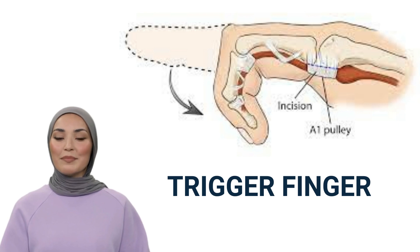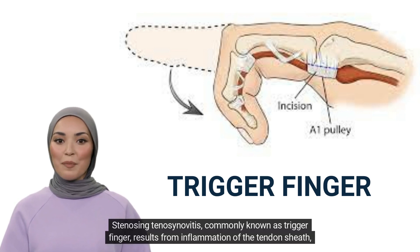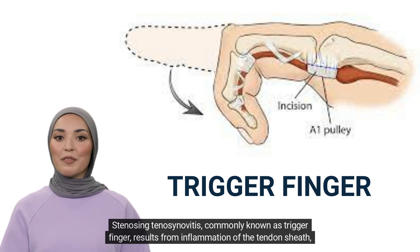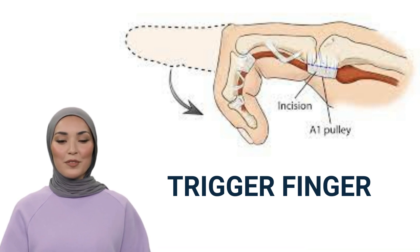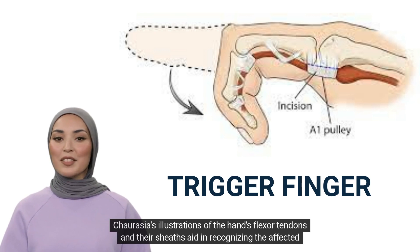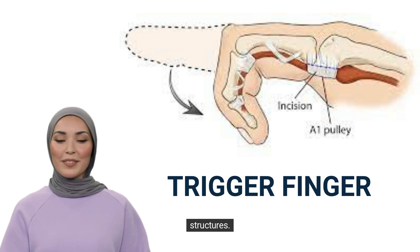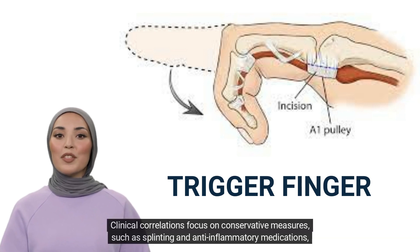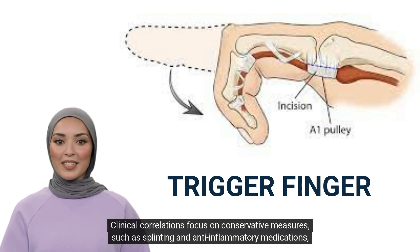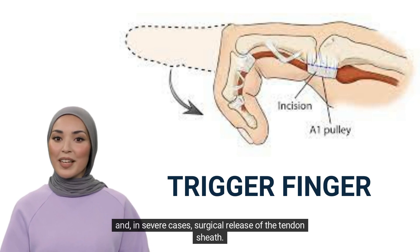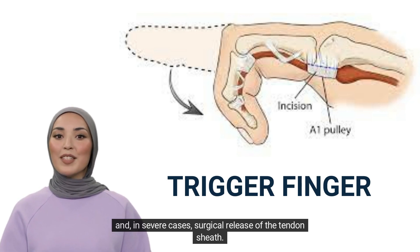Trigger Finger: Stenosing tenosynovitis, commonly known as trigger finger, results from inflammation of the tendon sheath, causing finger locking. Chaurasia's illustrations of the hand's flexor tendons and their sheaths aid in recognizing the affected structures. Clinical correlations focus on conservative measures, such as splinting and anti-inflammatory medications, and in severe cases, surgical release of the tendon sheath.